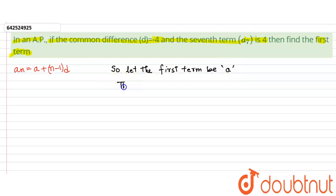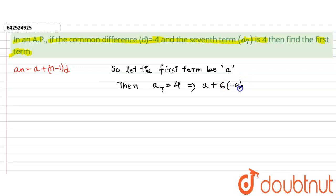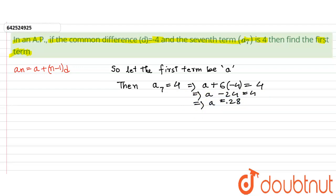Then, as the information is given, a7 equals 4, which further implies that A plus 7 minus 1, that is 6, times d equals 4. Now d here is given as minus 4, so we just need to put that value. This equals 4, which further implies that A minus 24 equals 4, and that further implies A to be 28.